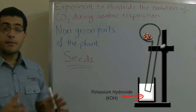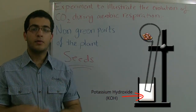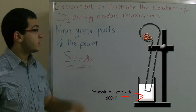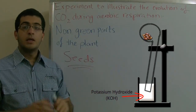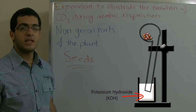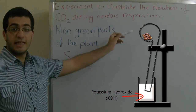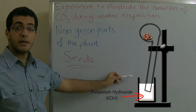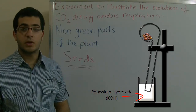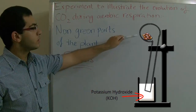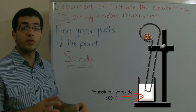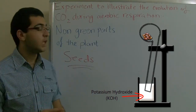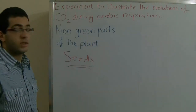We will have three apparatus, and they are almost the same. This is the first one: a retort with its end dipped in a beaker. This beaker contains potassium hydroxide, and the retort's head contains a group of dry seeds — not germinating seeds, they are still dry. This is the first apparatus.